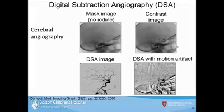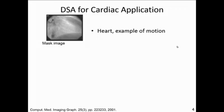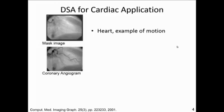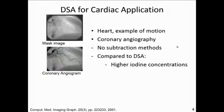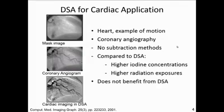Since the head is fairly rigid, this method would be very difficult to use for an organ that is in motion, like the heart. This is an example of DSA in the heart — a mask image showing the catheter ready to inject iodine. For coronary angiography, there are actually no subtraction methods currently used, which requires a higher iodine concentration and higher radiation exposure just to visualize the blood vessels.